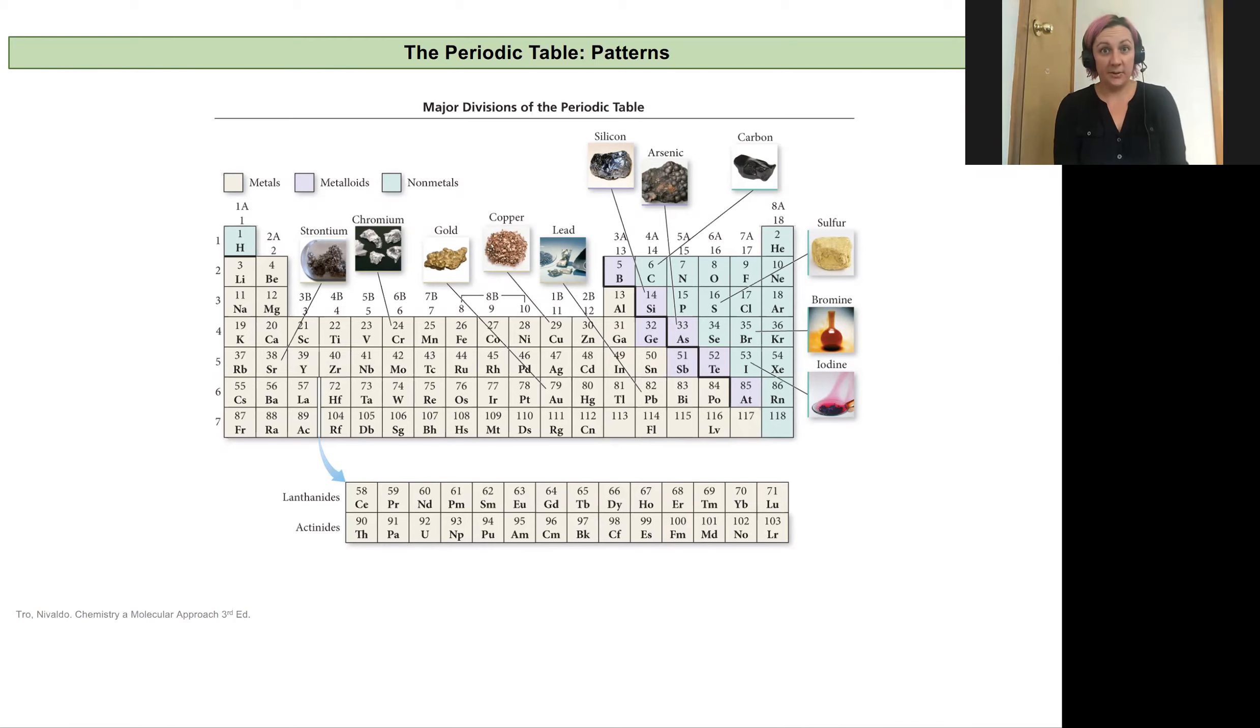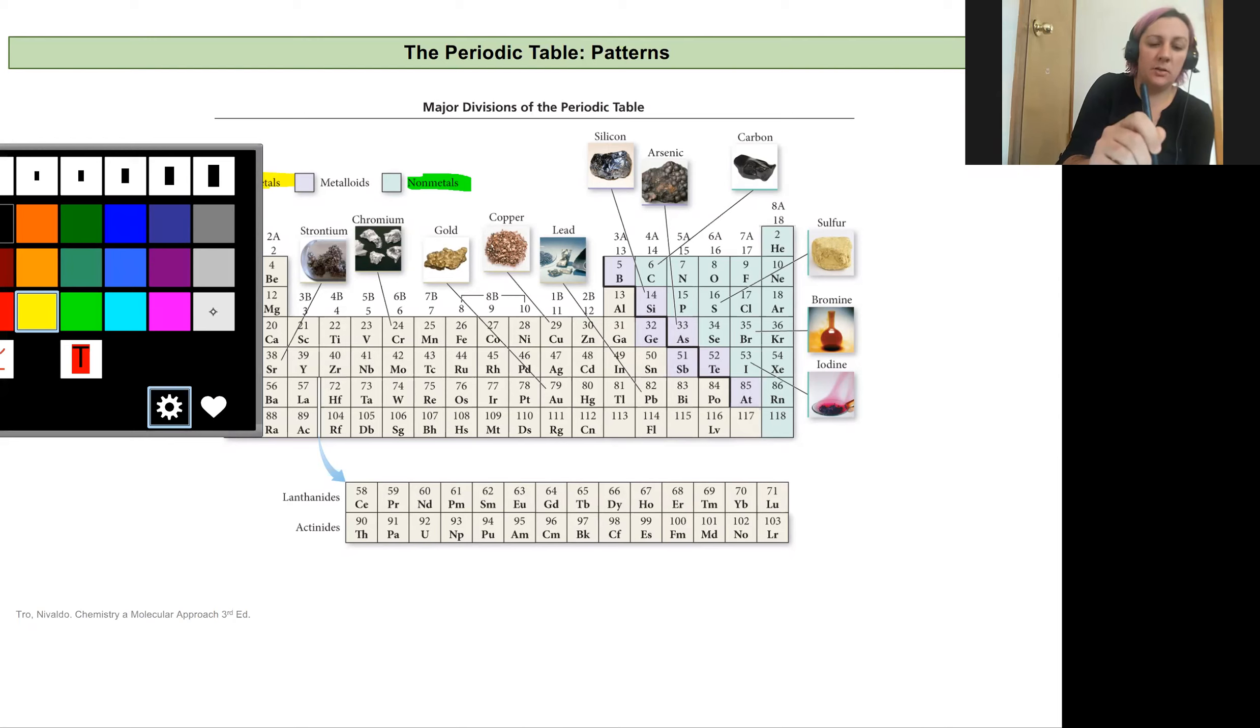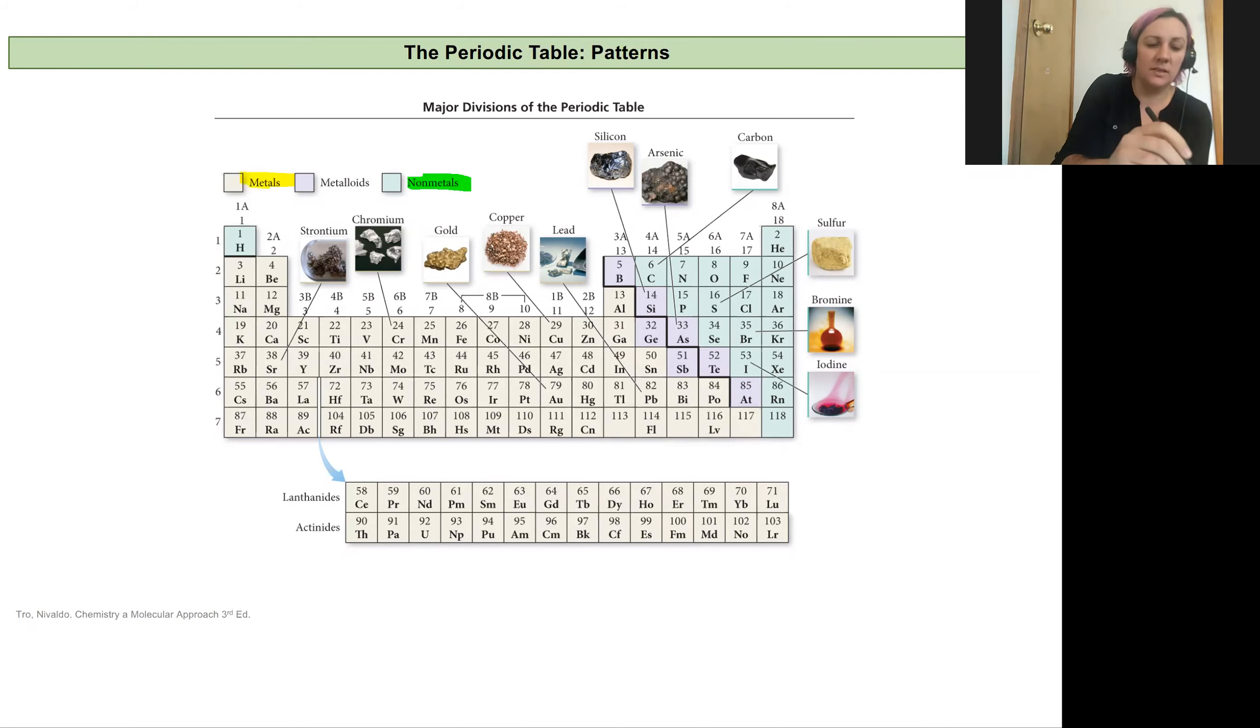So I have our periodic table up here again on our screen and looking at it I want to distinguish between nonmetals, metals, and something that kind of falls in between called metalloids. Our metals are typically going to be on the left-hand side of the periodic table and so they're gonna encompass most of the elements in our periodic table right here. I'm outlining them in yellow, hopefully you can tell on your screen. It also includes the lanthanide and actinides that we kind of subset underneath the rest of the periodic table.